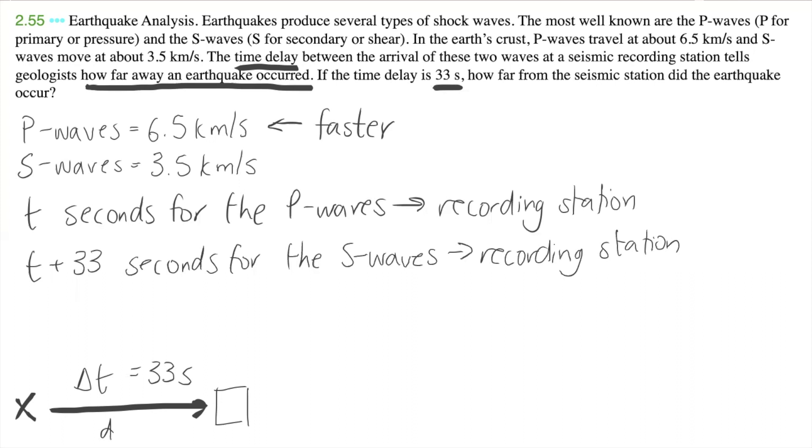And so we know that distance is equal to T times the P wave speed, so that's going to be 6.5 kilometers per second. For the time delay, we know that it's going to be equal to T plus 33 times 3.5, which is the speed of the S wave.